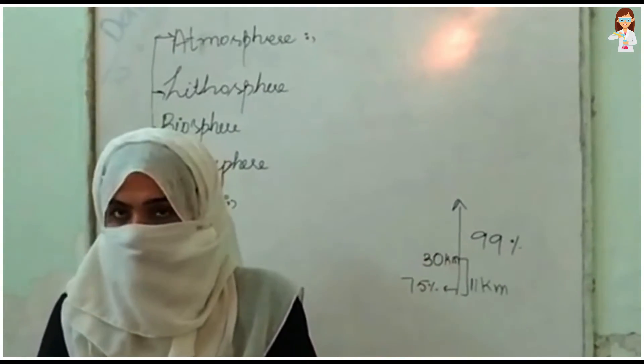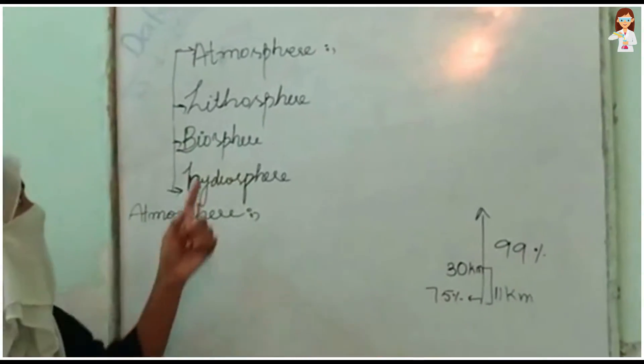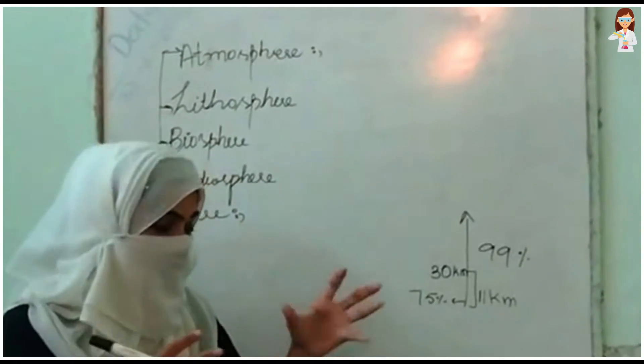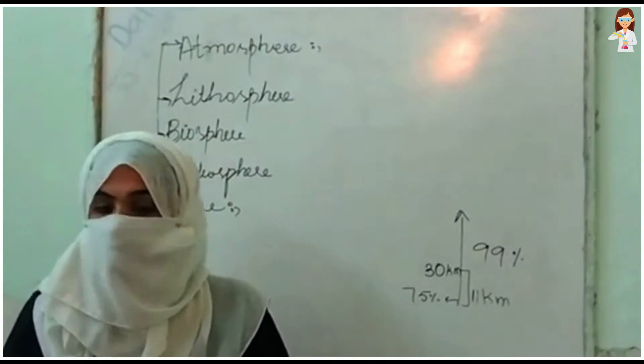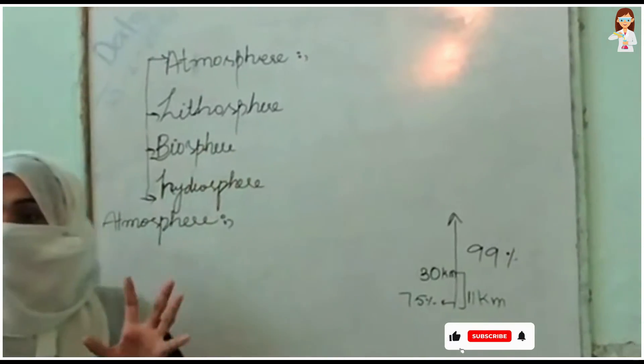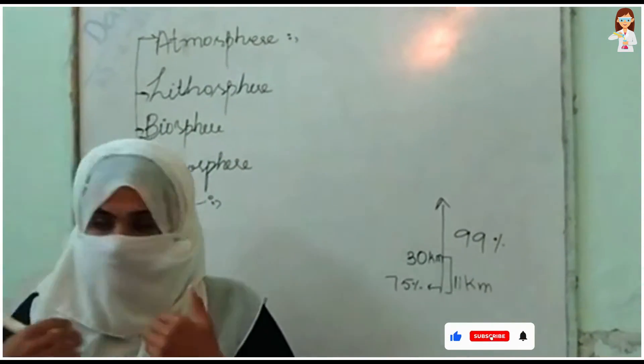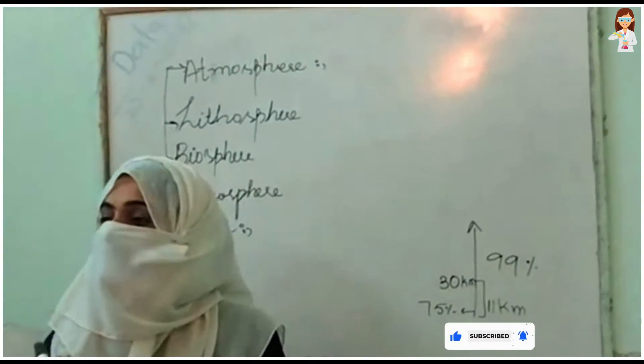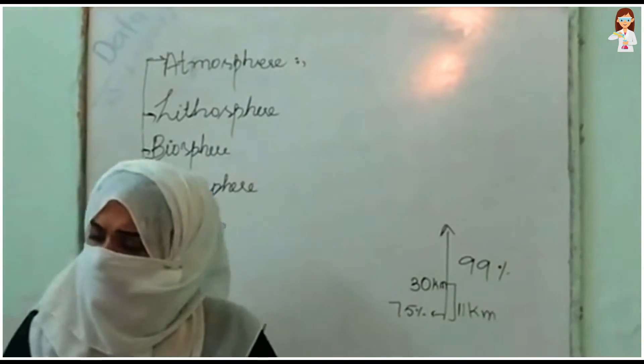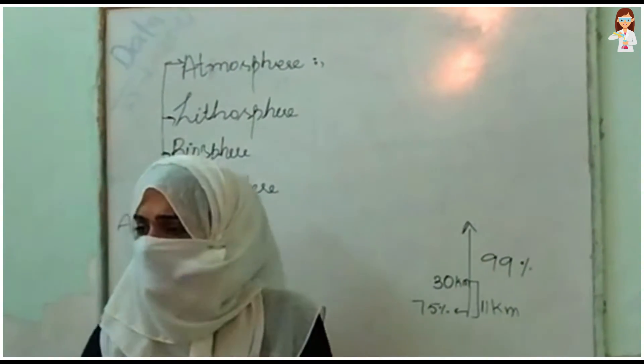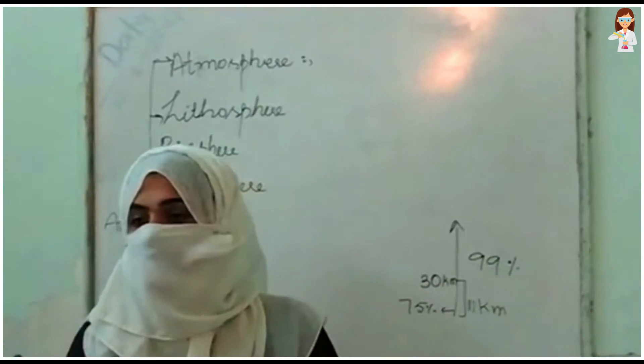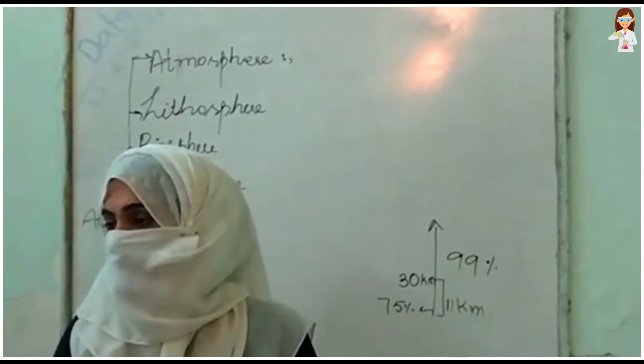This is the lithosphere, and the earth is called lithosphere. It is called bio... living. We are called biosphere. In addition, the last hydrosphere is 70% of water, which is hydrosphere.